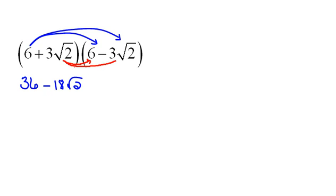Then, distributing our second term to the binomial, 3 square roots of 2 times 6 would be plus 18 square roots of 2. And 3 square roots of 2 times negative 3 square roots of 2 would be negative 9 square roots of 4.